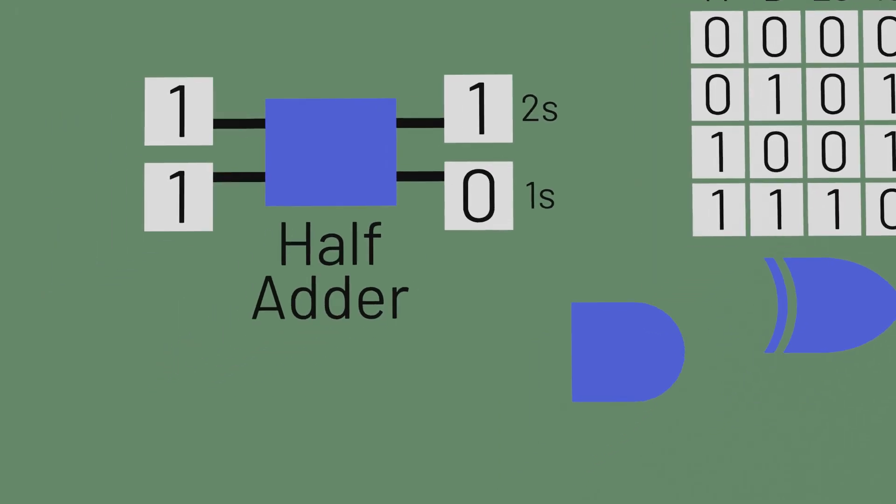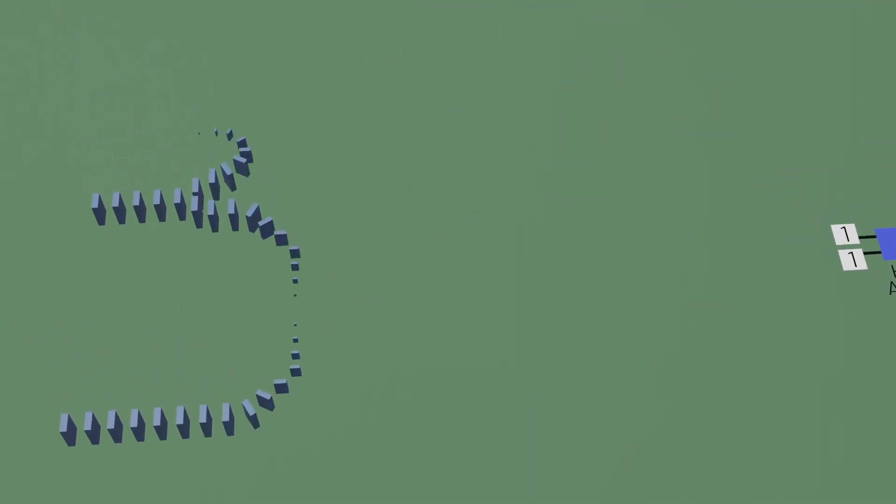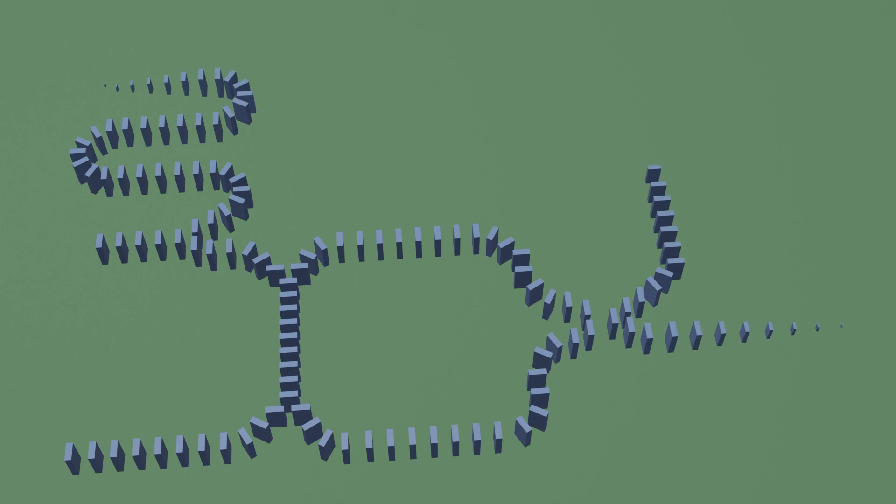So by combining the ideas from our domino AND and domino exclusive OR gates, we can create a domino half adder.